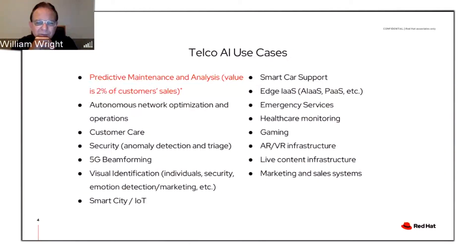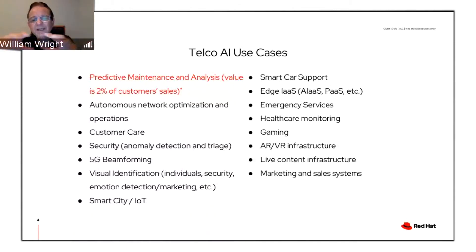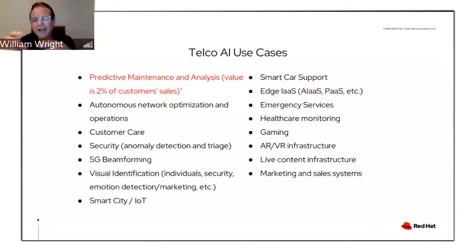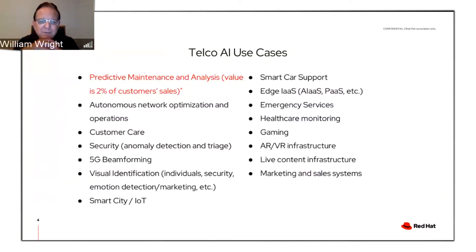Healthcare monitoring is a really big one. Other interesting areas emerging include AR/VR infrastructure, which is also edge-based, live content infrastructure, and marketing and sales systems. There are actually companies today deploying AI and ML systems at the edge to assist in various forms of retail services. There really is a lot of activity going on both at the edge and at the core in terms of AI and ML use in telco.